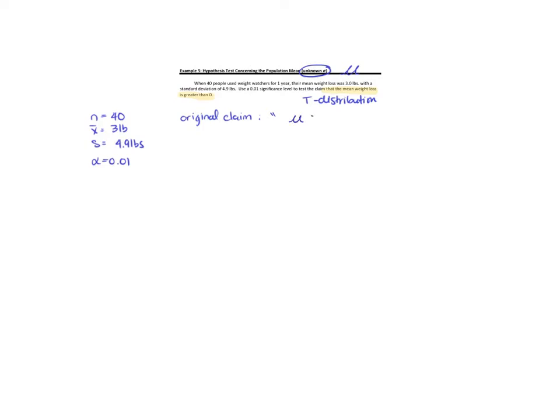Notice that the original claim does not contain equality, so that is not going to be our null hypothesis. Let me write down the first step: we want to know our null hypothesis and alternative hypothesis. So that's not going to be the null hypothesis.